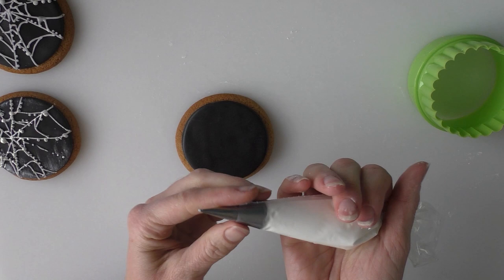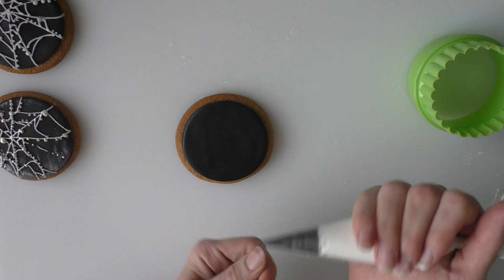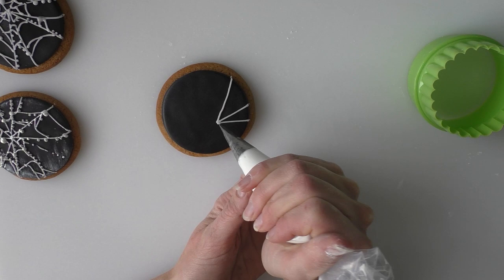So once that's on, we're just going to pipe our royal icing now into a bit of a spiderweb shape. I've just got a nozzle on mine that's a 1.5 one. So you can either start in the middle or to one side.